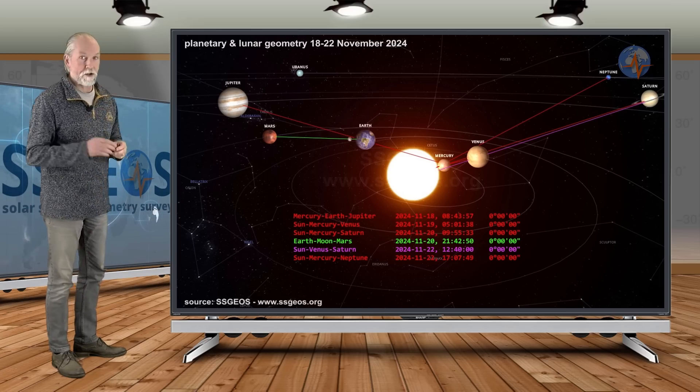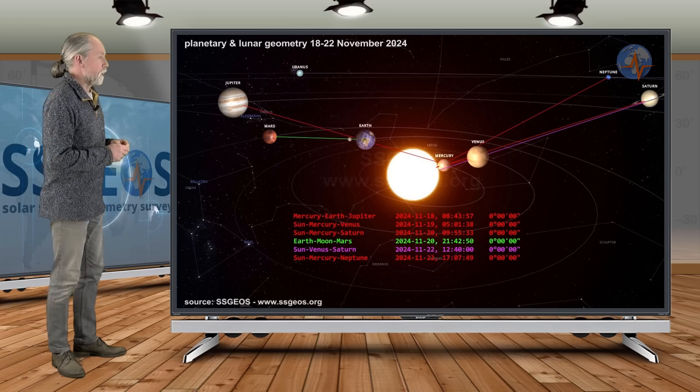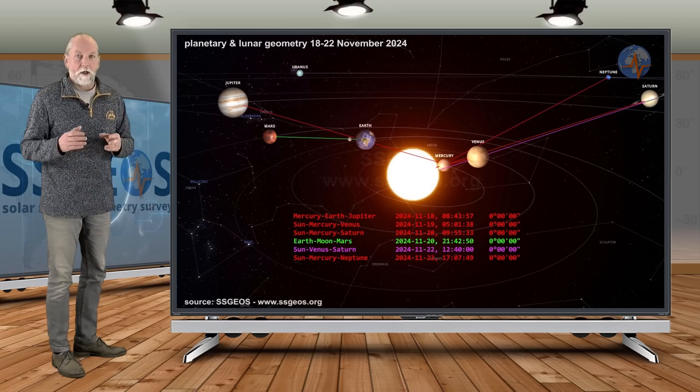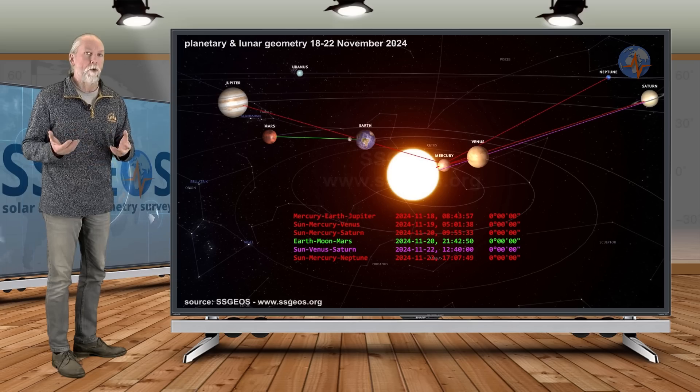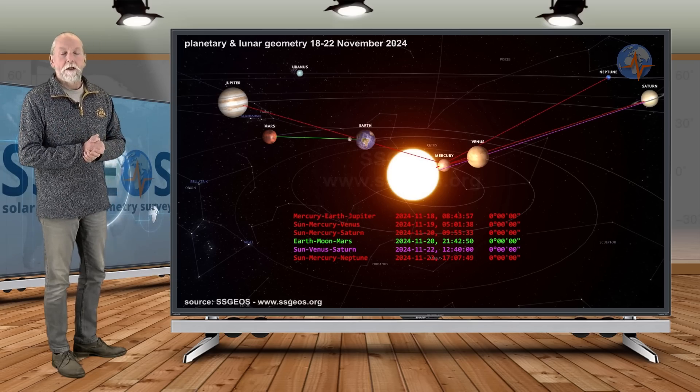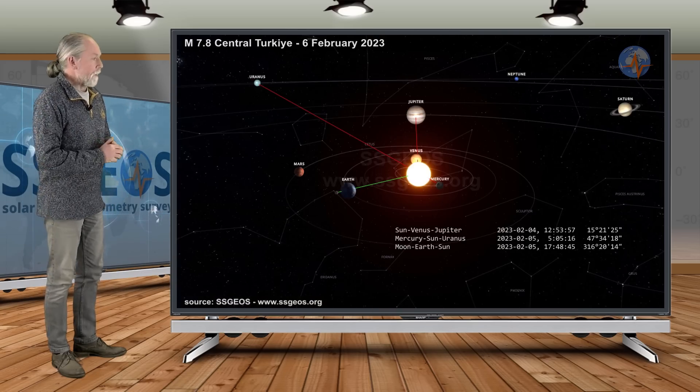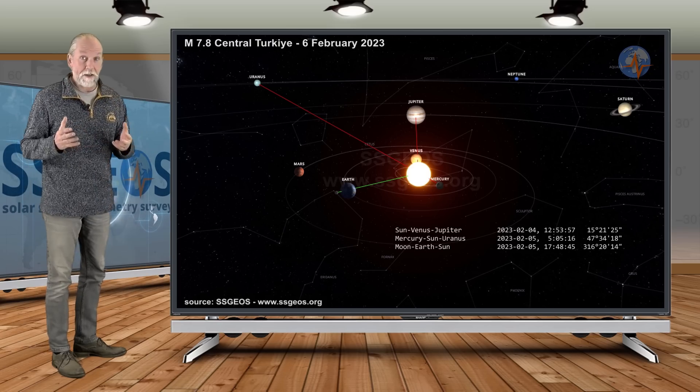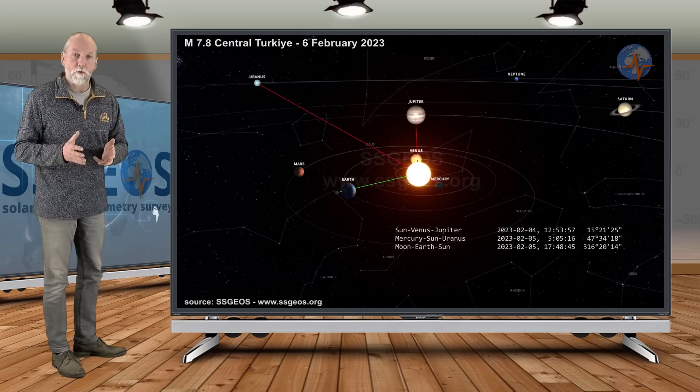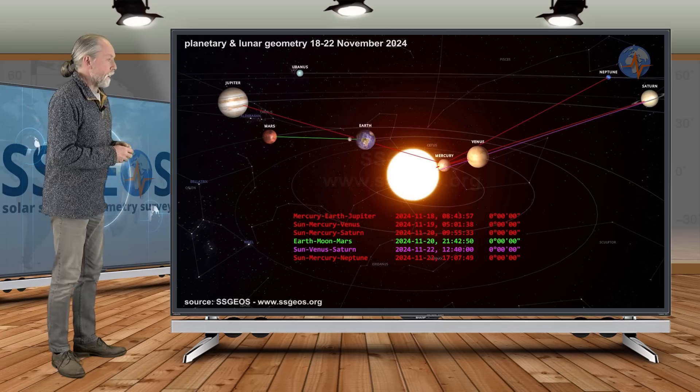And then finally Sun-Venus-Saturn on the 22nd, and five hours later only, followed by Sun-Mercury-Neptune. So we have two planetary conjunctions on the 22nd, a near exact convergence with Sun-Venus-Saturn and Sun-Mercury-Neptune. The sun is involved in both planetary conjunctions.